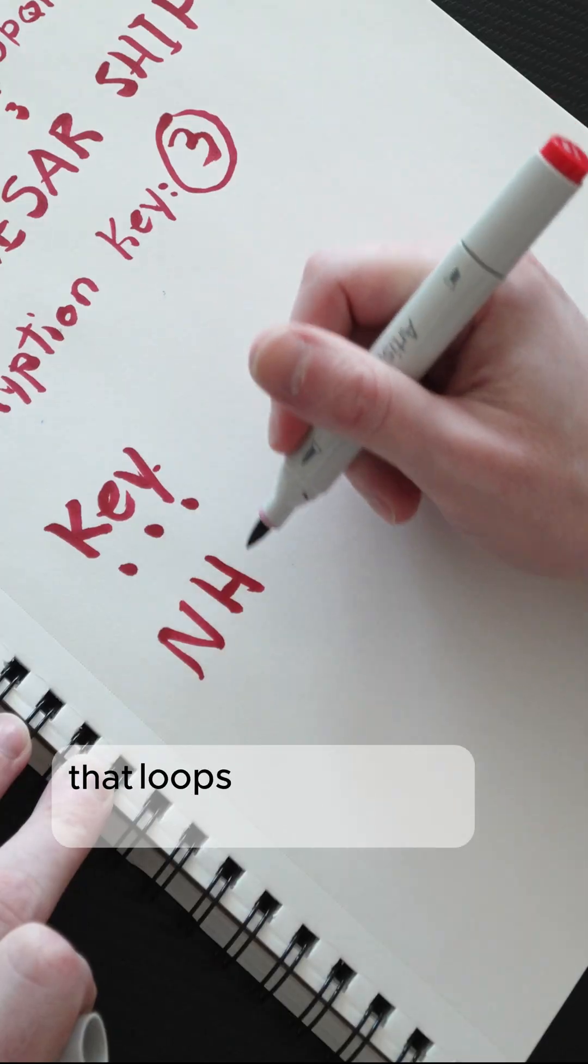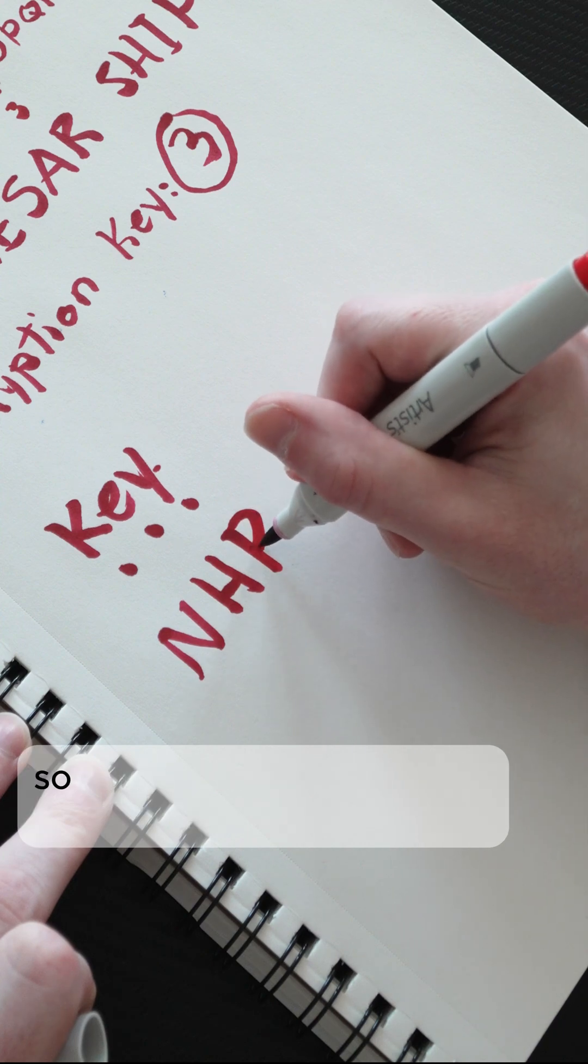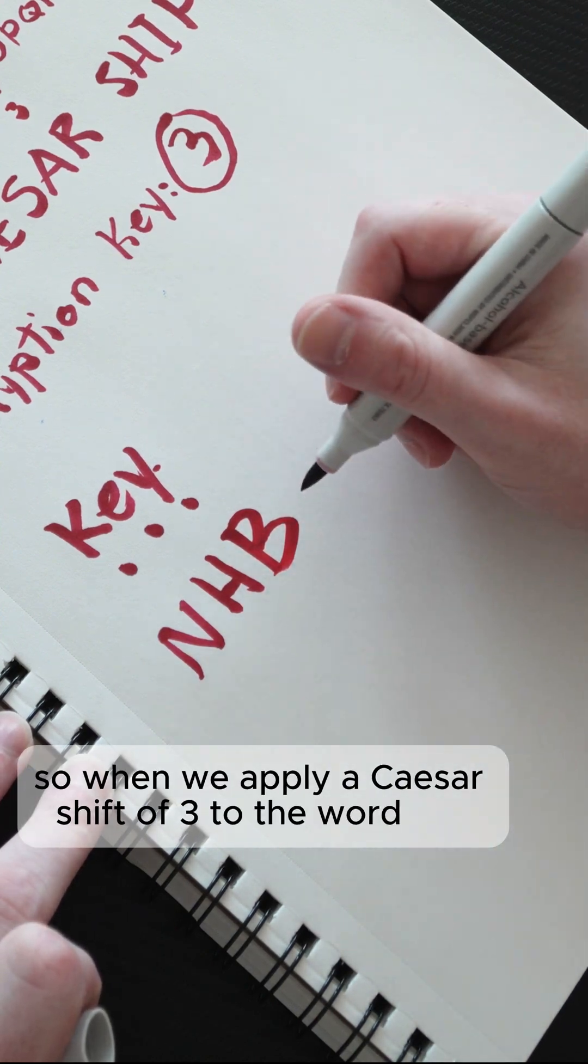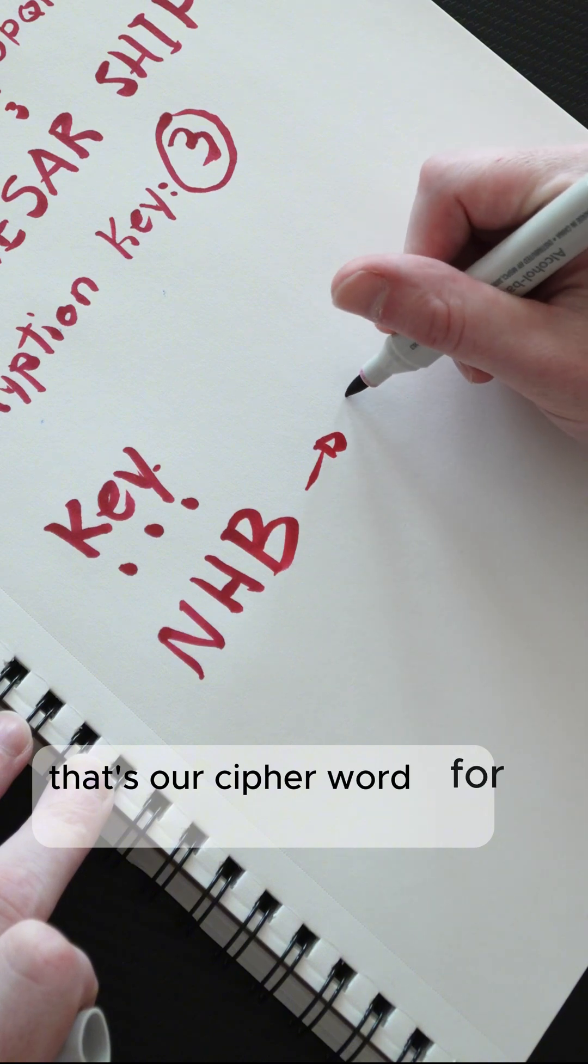That's the fun part about Caesar shifts. It loops back around when you hit the edge. So when we apply a Caesar shift of three to the word key, we end up with NHB. That's our cipher word for today.